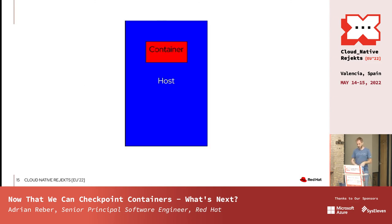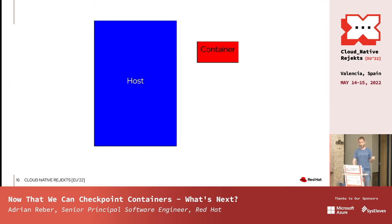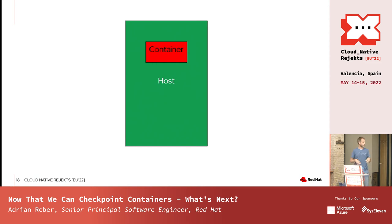This is a really simple use case. I have a system running a kernel — the blue kernel — and there's a container running on it. Now I want to reboot the system, but my container takes a long time to start up — like five minutes — because it needs to read a lot of data from disk and initialize libraries. So what I can do is upgrade the kernel, take a checkpoint of the container so it's written to disk, reboot the host, and when it comes back with the new kernel the container is restored and keeps on running just as before.